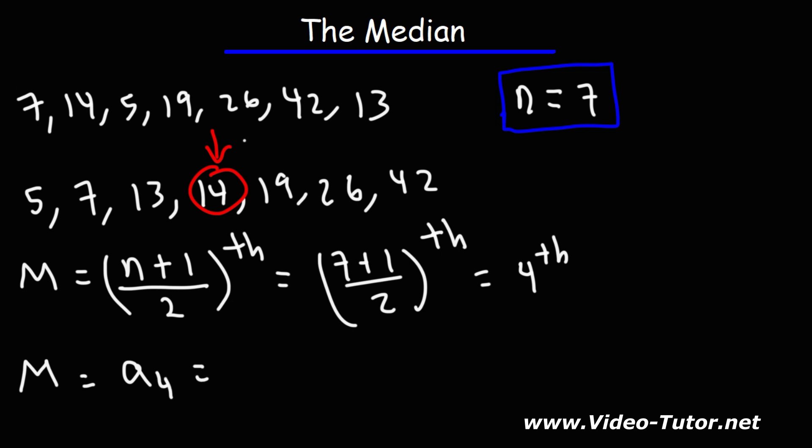And the value of the 4th term is 14. Therefore, 14 is the answer. So, this formula tells you which term the median is equivalent to. Now, this formula works whenever you have an odd set of numbers, or in other words, when n is equal to an odd value. But what about when n is equal to an even value? What happens then?